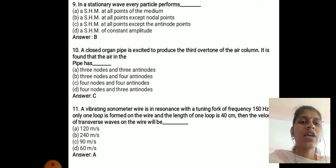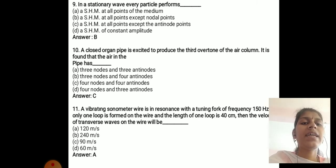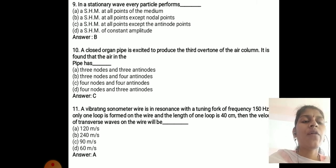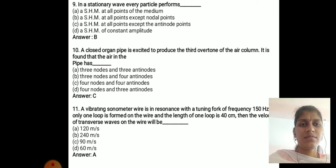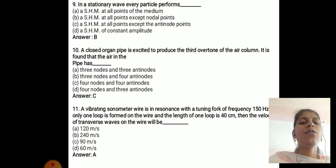A closed organ pipe excited to produce the third overtone has 4 nodes and 4 anti-nodes in the air column.